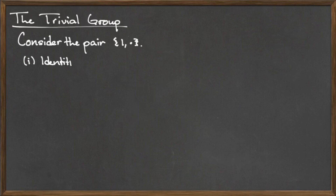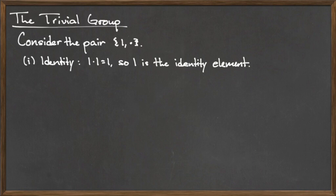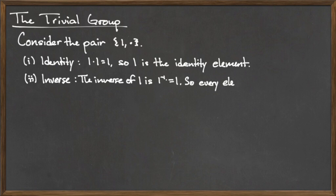The first requirement is the identity requirement. Since 1 is the multiplicative identity, and 1 is the only element in this set, the identity requirement is satisfied. The second requirement is the inverse requirement. The inverse of 1 is 1 itself, so every element in this set has an inverse, so the inverse requirement is satisfied.